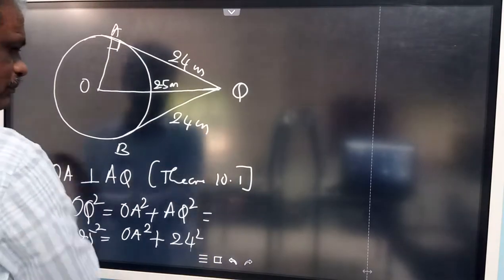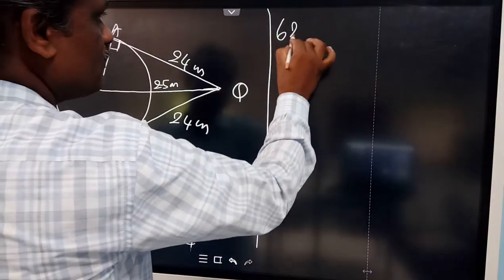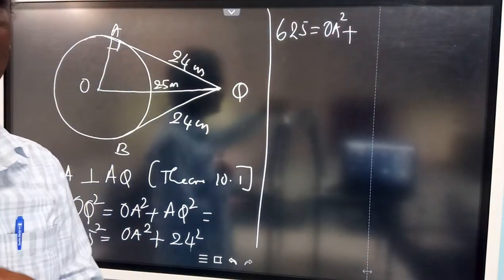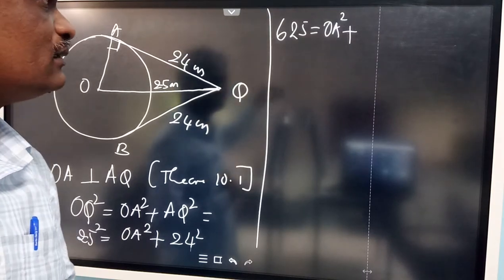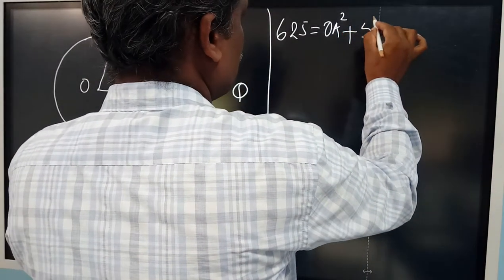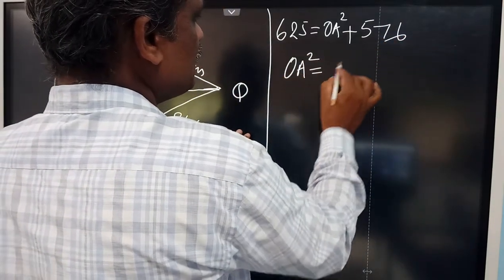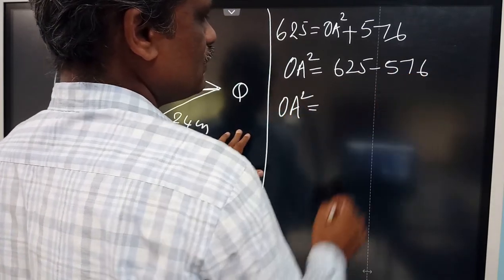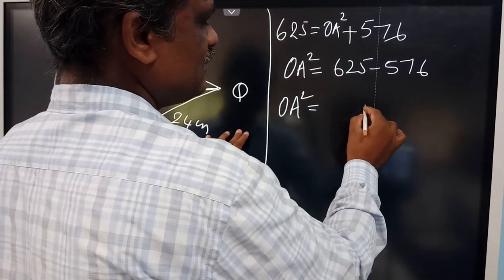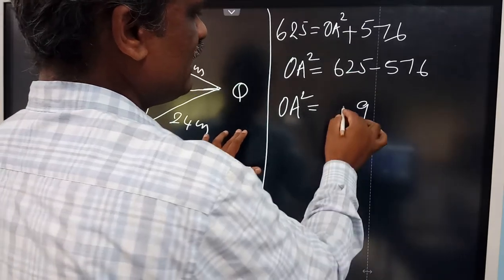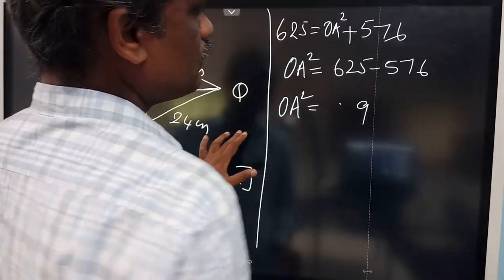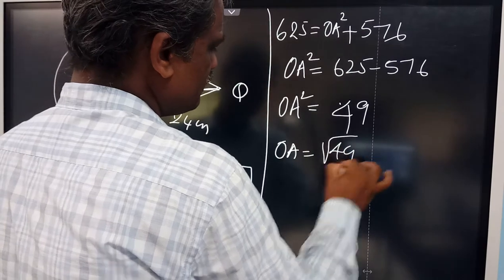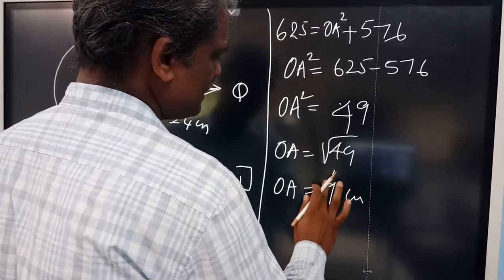25² = 625 and 24² = 576. So OA² = 625 − 576 = 49. Therefore OA = √49 = 7 centimeters.